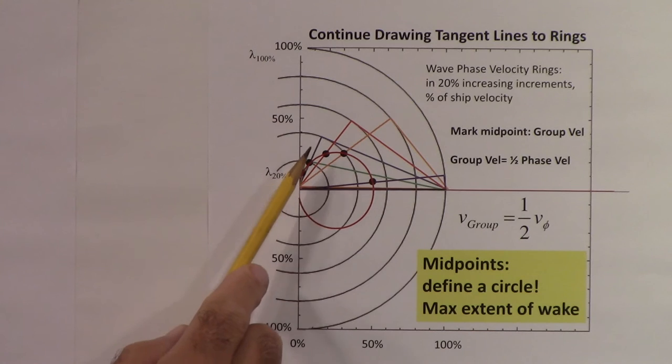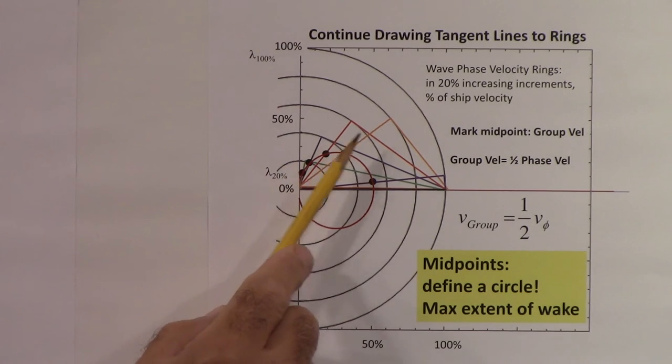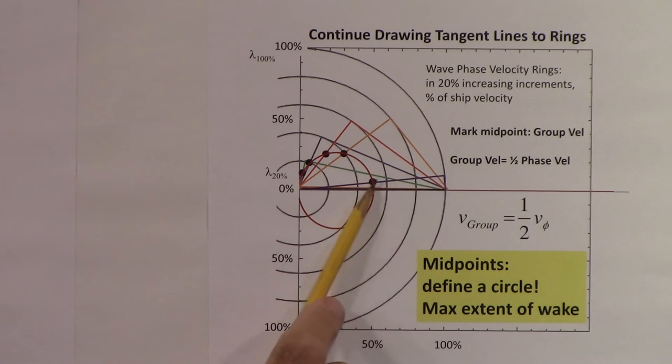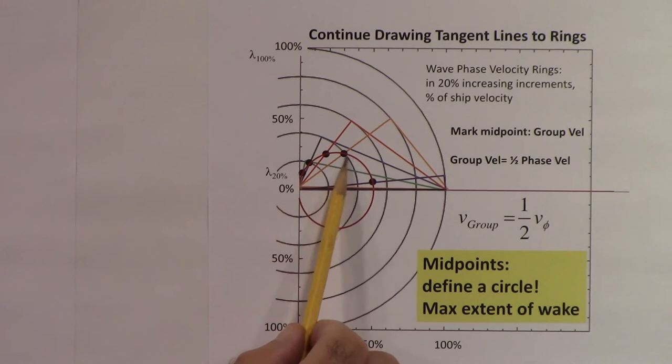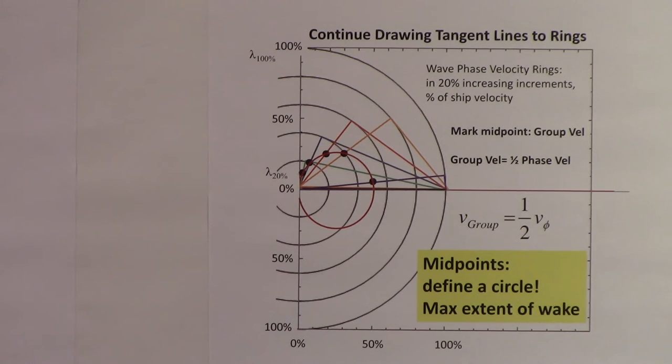If we come over here, I've continued drawing those tangent lines to the different rings. We have one here, the green one is for the 20% one, the bluish or purple one going out a ways, then the red one, then the orange one. And finally, this last one here, I'm showing that one just off a little bit from the ring. Again, the wave rings are in 20% increments of the ship velocity. What I've done now is I've put a dot in representing the group velocity.